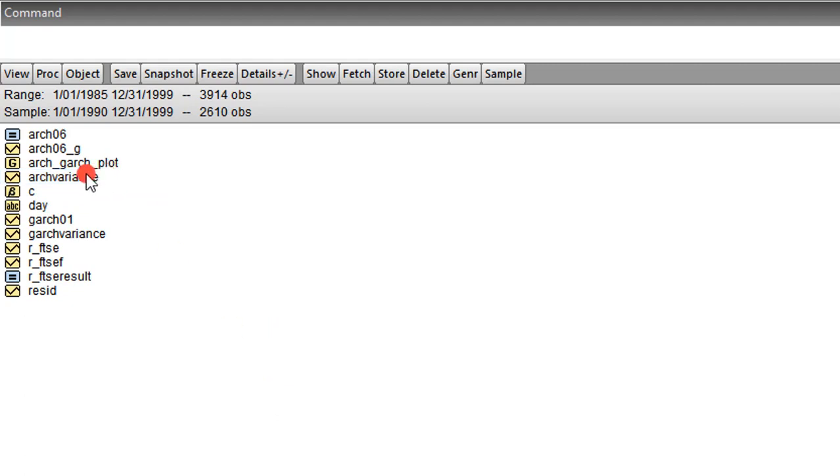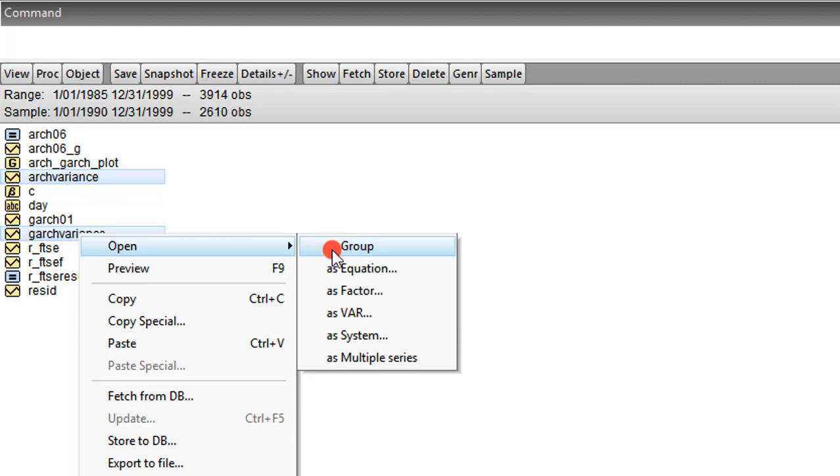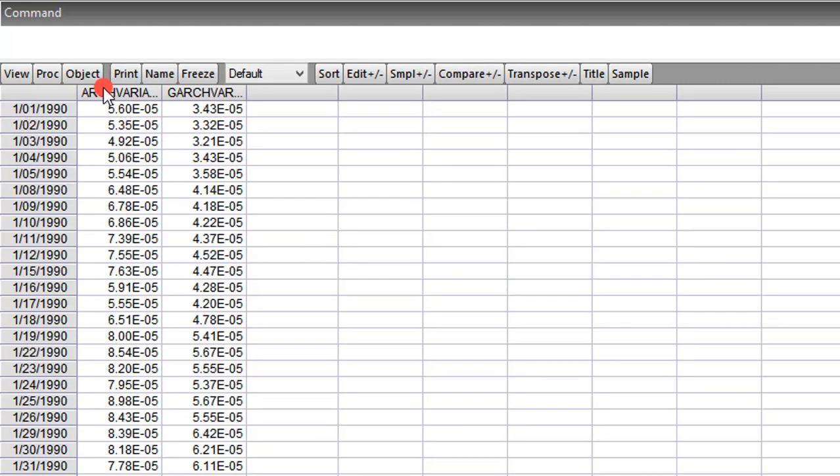So I click on the ARCH Variance. I press down the CTRL key. I click on the GARCH Variance. I right-click. I open both series as a group. So I have both of them here. This is the ARCH Variance and here is the GARCH Variance.